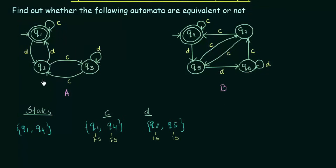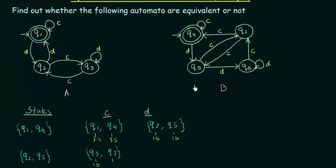Now let us take the next pair of states, which will be Q2 and Q5. Let us see where they go on getting inputs C and D. Q2 on input C goes to Q3, and Q5 on input C goes to Q6.